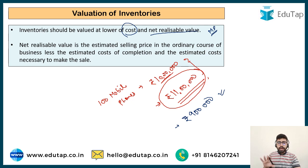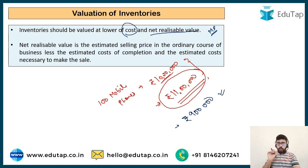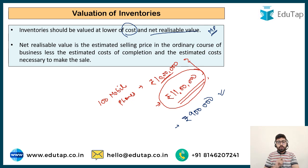Conversely, if the value of the mobile phones was only Rs. 9 lakh, prudence says you are going to incur a loss on them, so you must book it now. You should mention inventory at Rs. 9 lakh, not Rs. 10 lakh, and book the loss of Rs. 1 lakh immediately. This is why we follow the principle that inventories should be valued at the lower of cost and net realizable value.